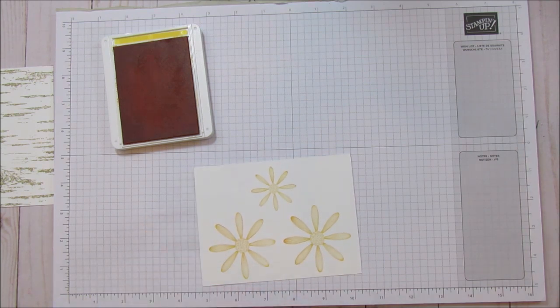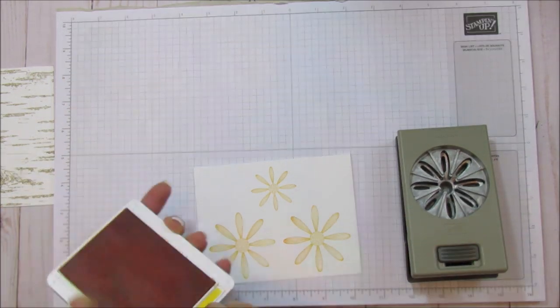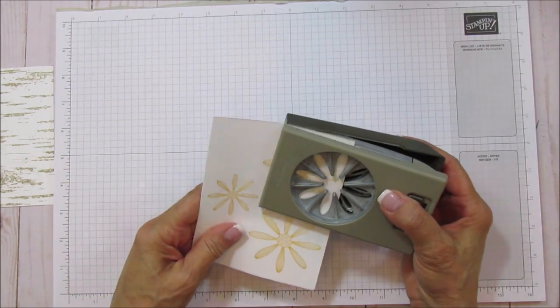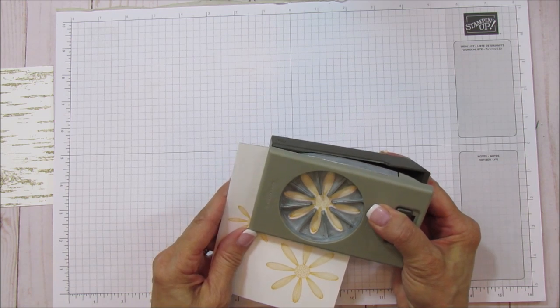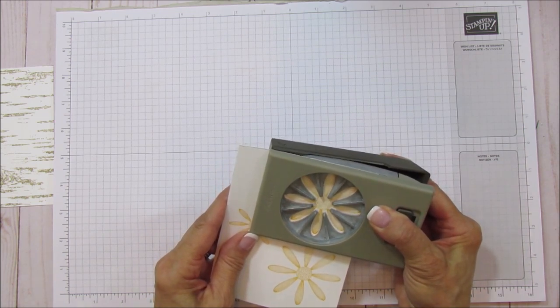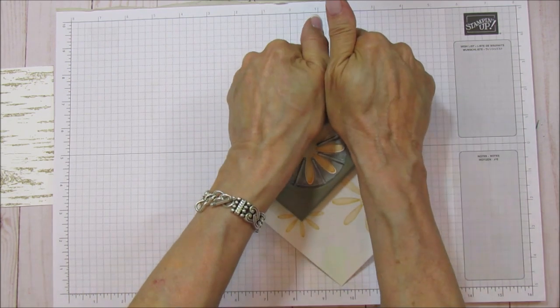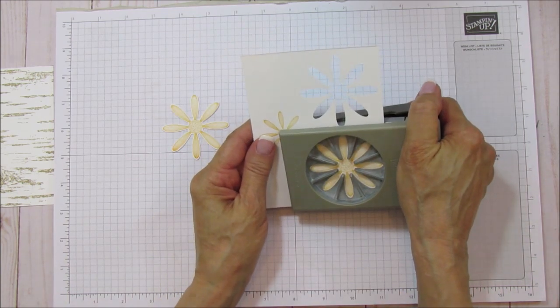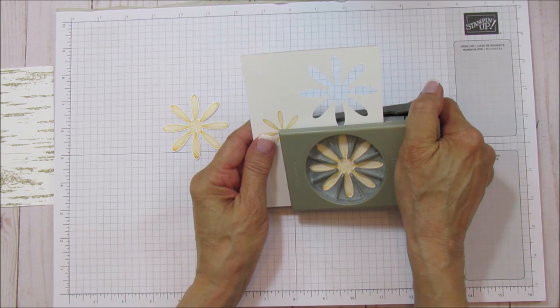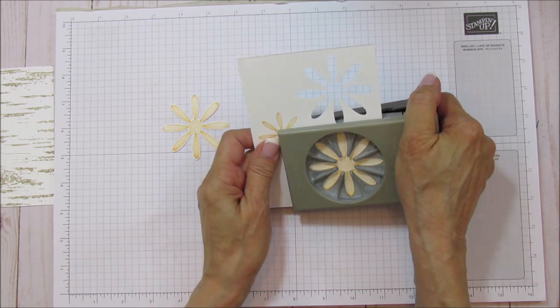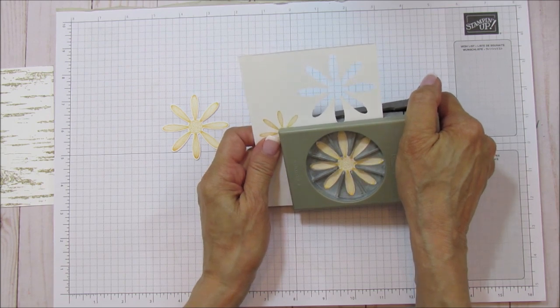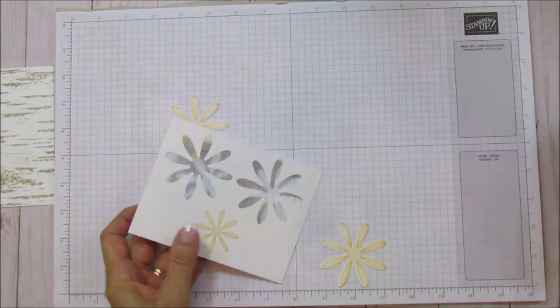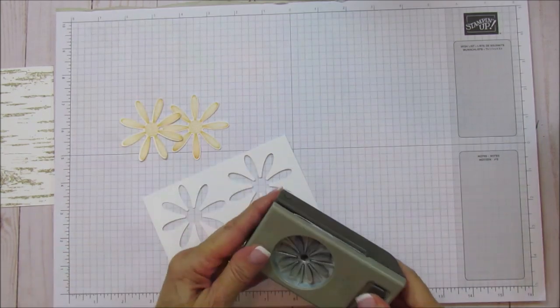Alright, so we're going to just go ahead and use our punches and we are going to punch those out. Let me close this back up because we don't need that one anymore. So we are going to line these up in here. And this is thick Whisper White. So it does take a little bit to punch through. It's pretty thick.